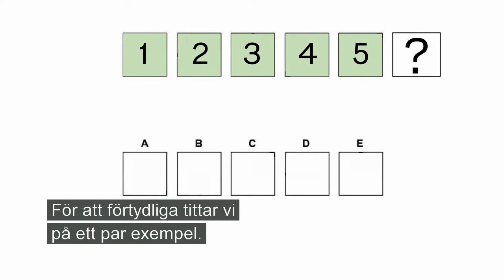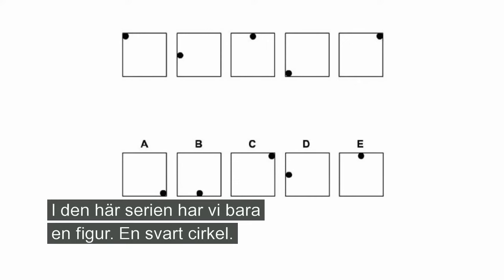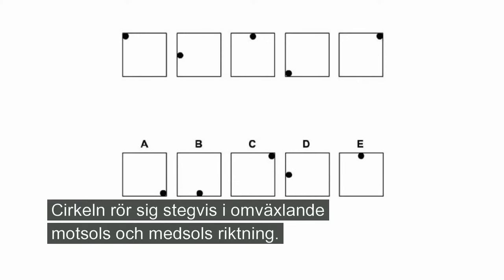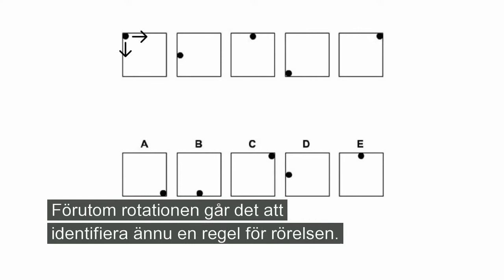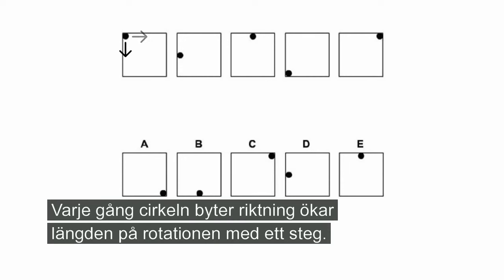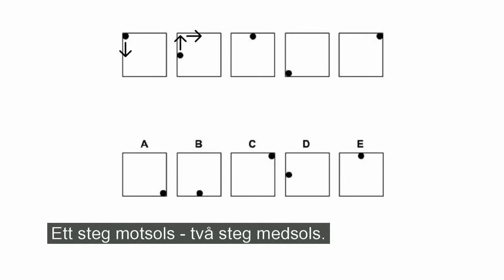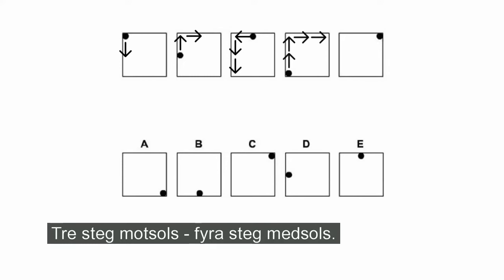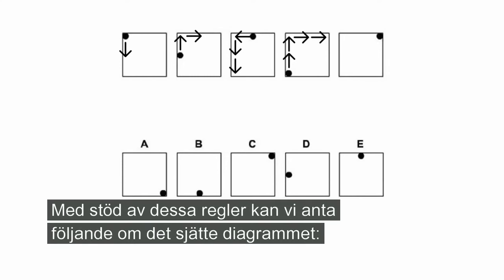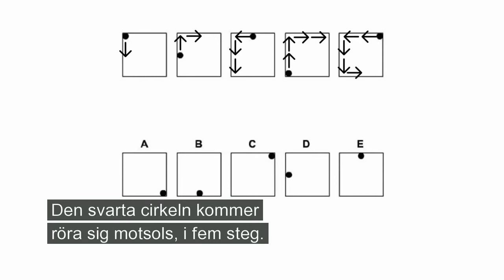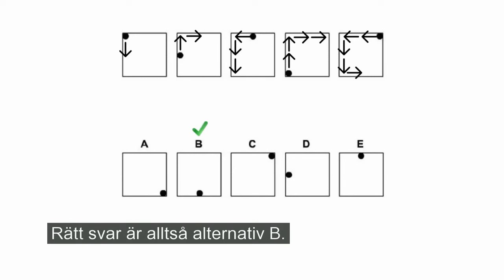För att förtydliga tittar vi på ett par exempel. I den här serien har vi bara en figur — en svart cirkel. Om vi tittar på hur cirkeln rör sig så tycks det vara stegvis i omväxlande motsols och medsols riktning. Varje gång den byter riktning ökar den längden på rotationen med ett steg: ett steg motsols, två steg medsols, tre steg motsols, fyra steg medsols. Med stöd av dessa regler kan vi anta att den svarta cirkeln i det sjätte diagrammet rör sig motsols med fem steg. Rätt svar är alltså alternativ B.